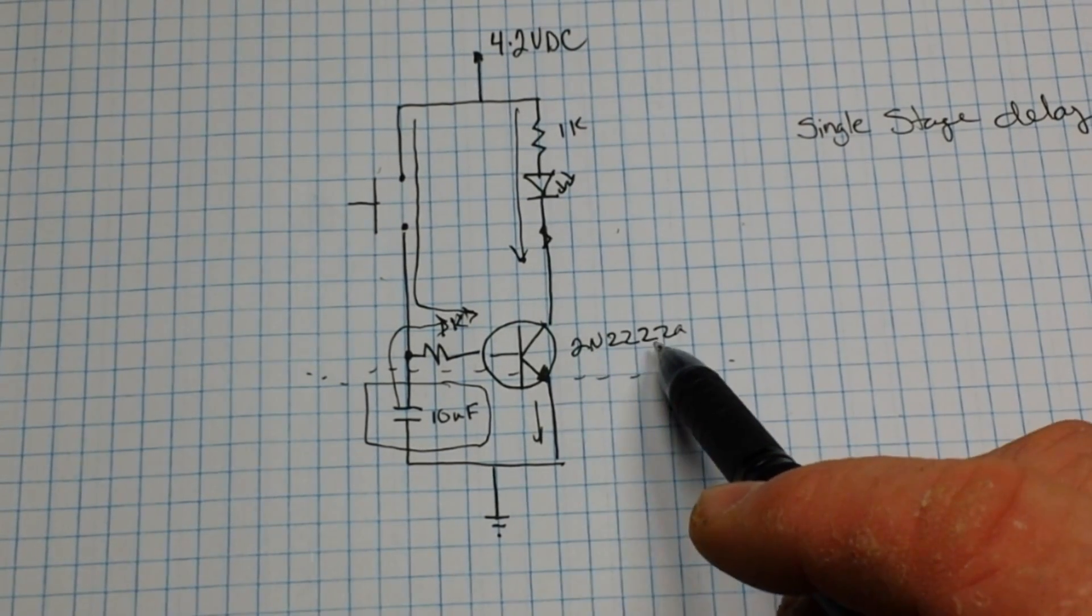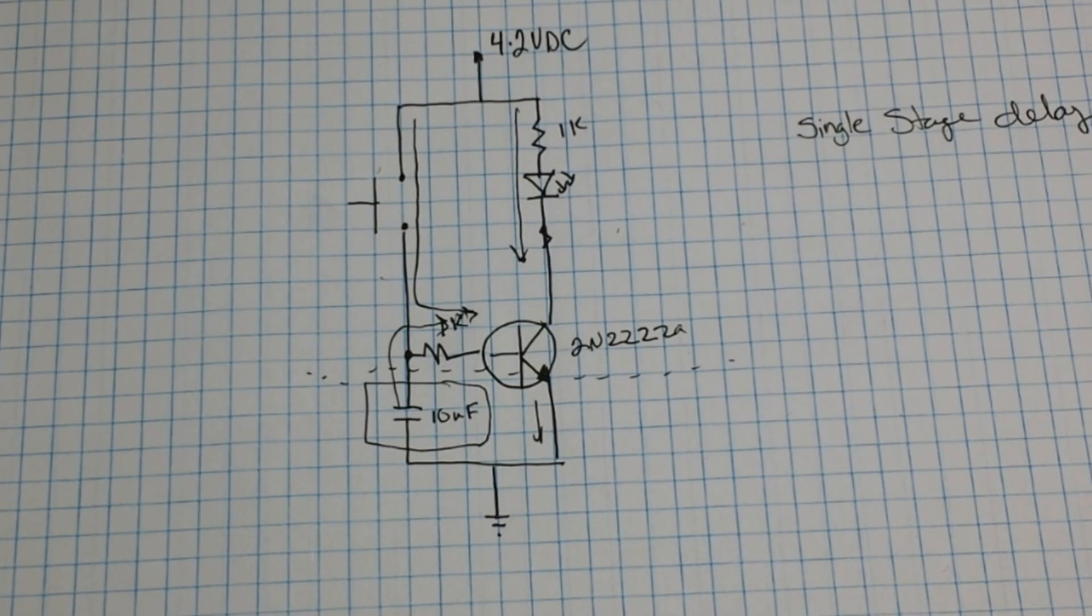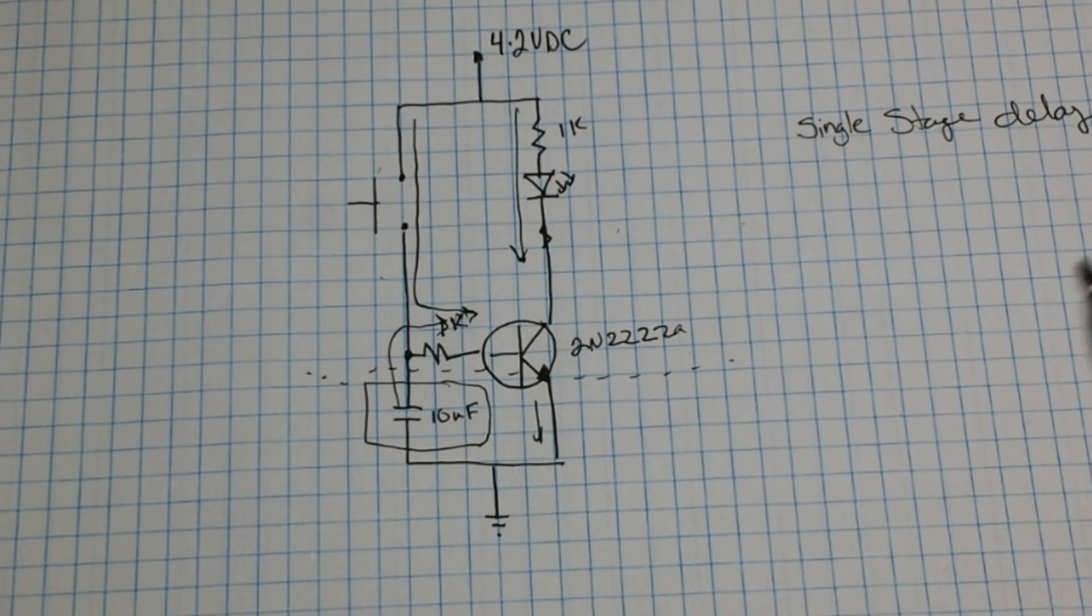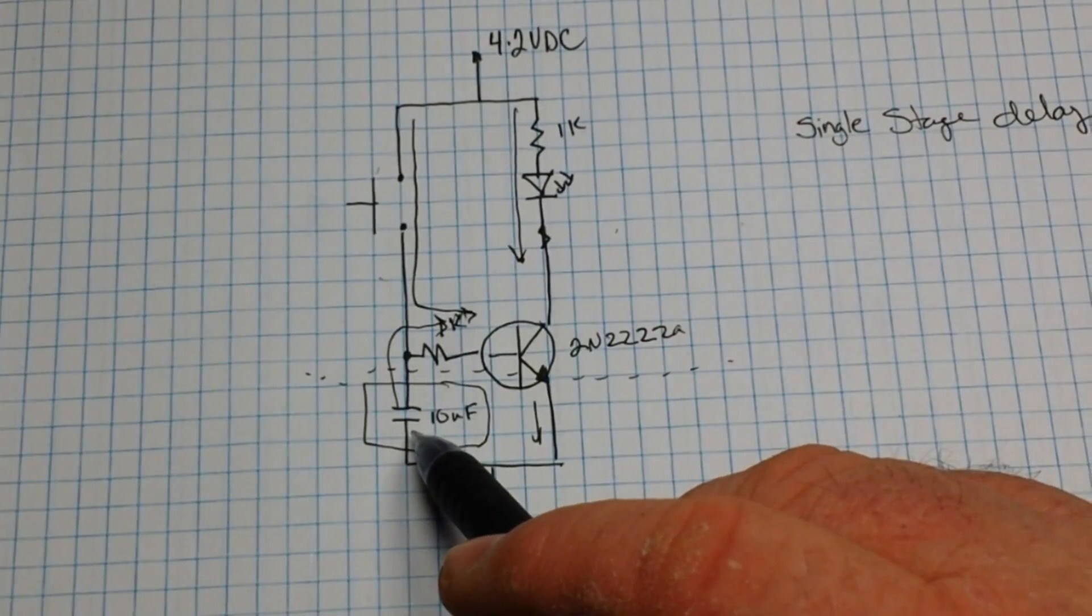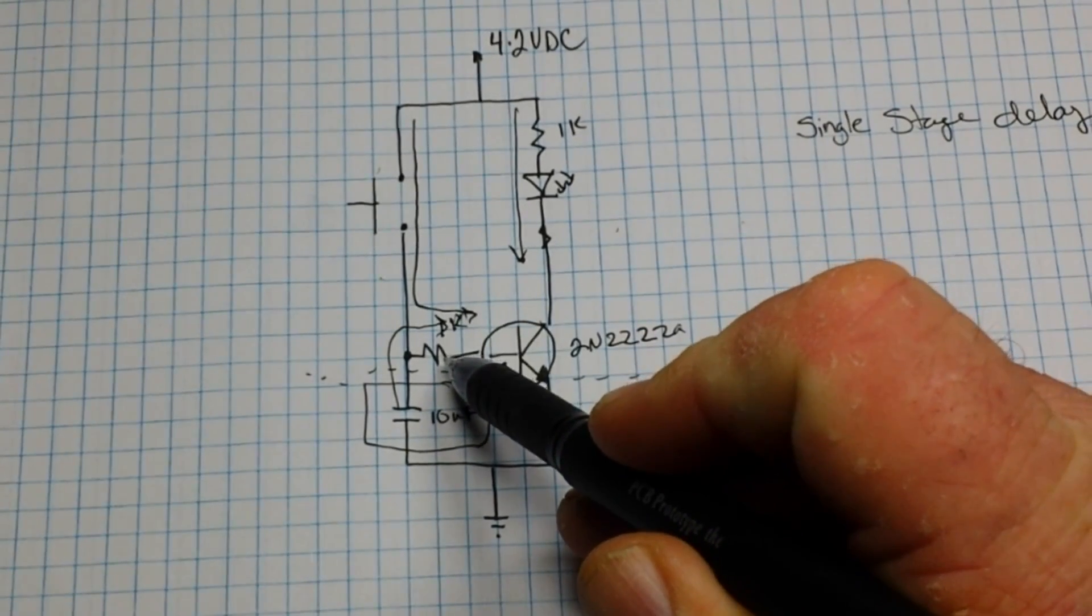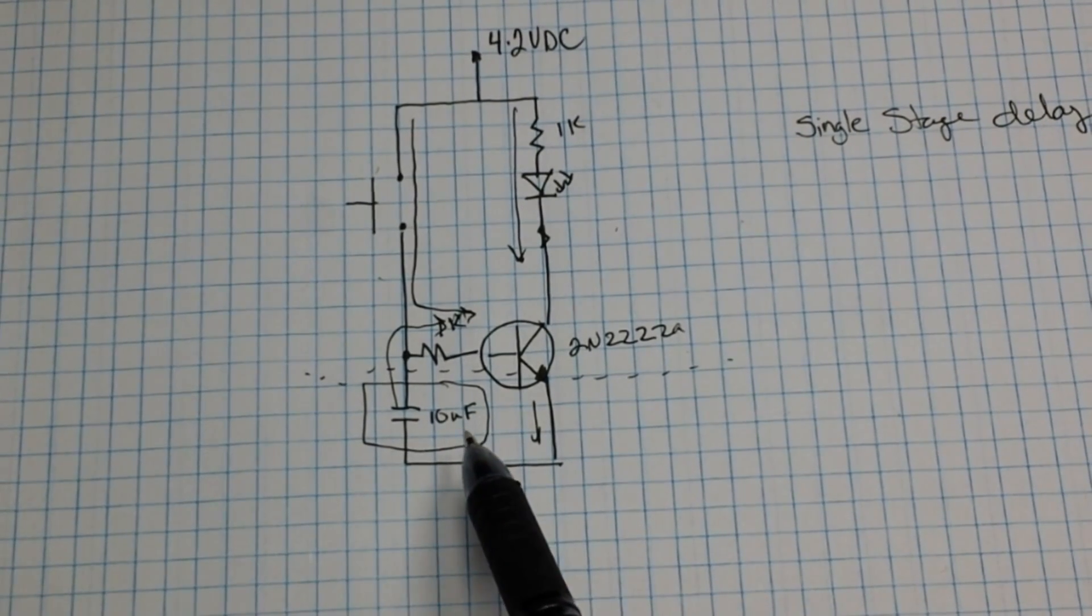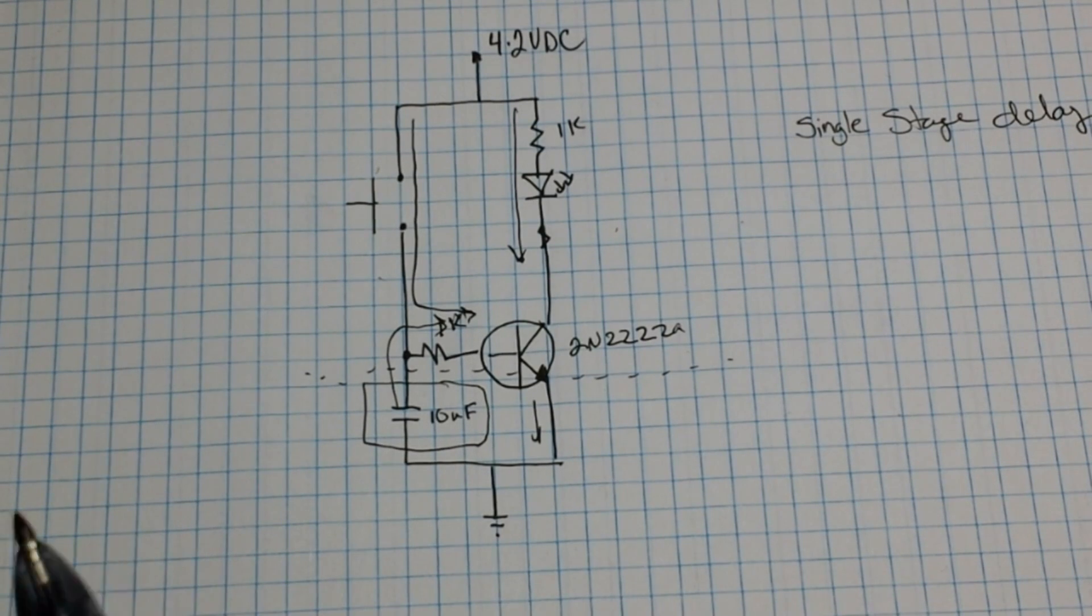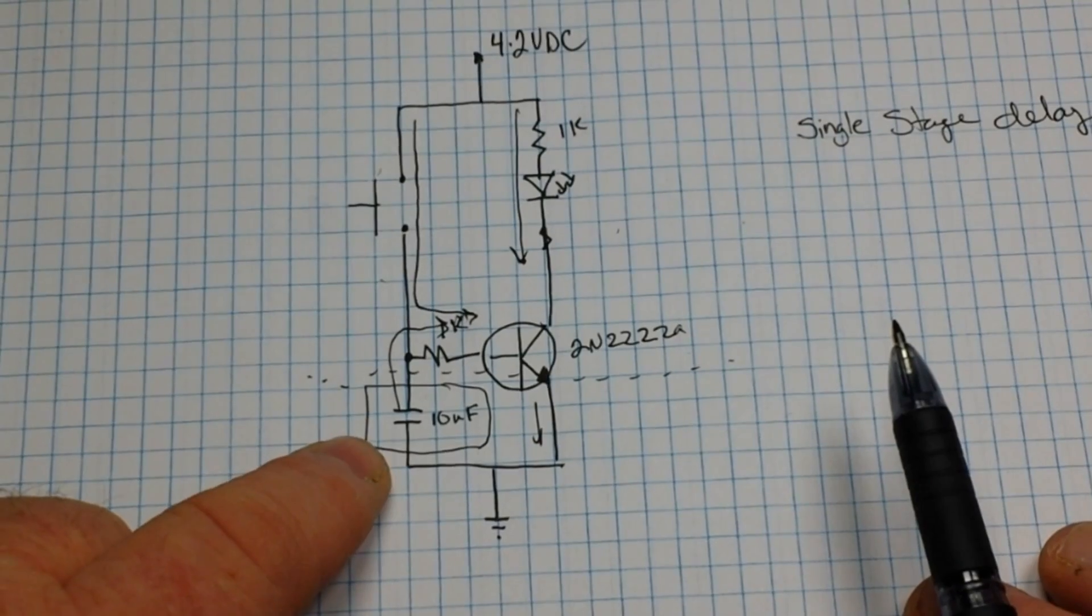In this case we're using the 2N2222A, but it can be any NPN transistor because the gain doesn't matter - we're basically using it as a switch. We're turning it on and we're turning it off. Right here is our capacitor in the circuit, and between the capacitor and this resistor we are going to control the timing of this circuit.